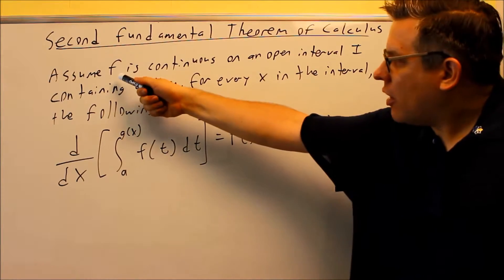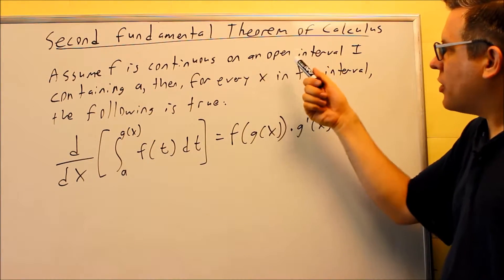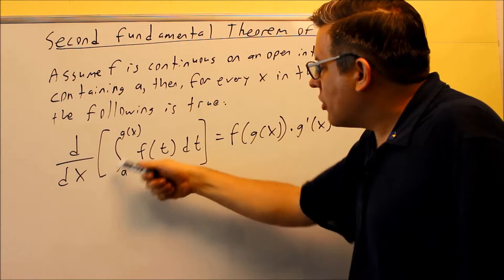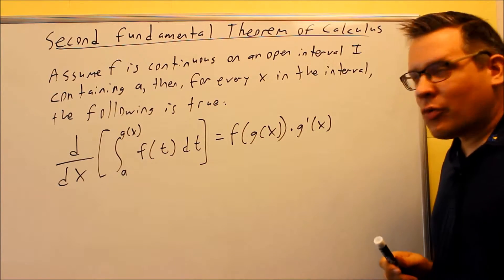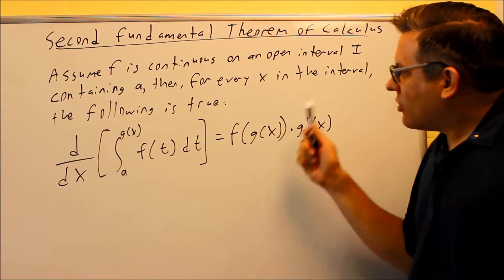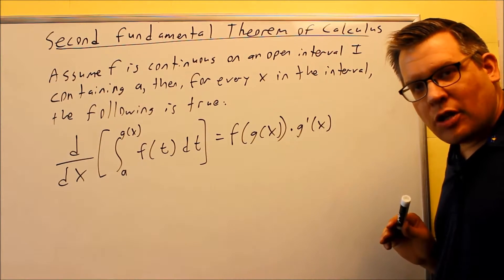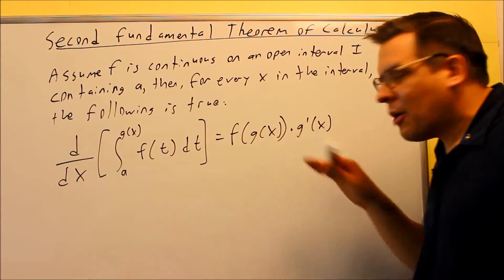So here's the formalities: lowercase f is continuous, it has to be continuous on open interval I containing the a, so the a is going to be the constant that we have here. Then for every x in the interval, the following is true. So this is a formula that you probably don't see in your book, but it's going to work for you for the problems that you're going to work through.